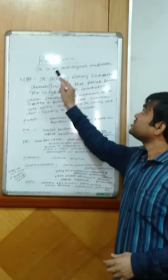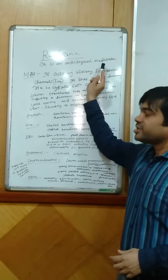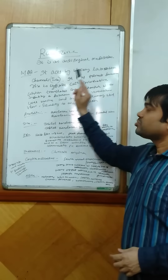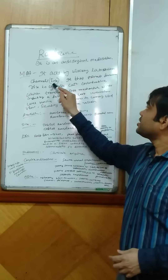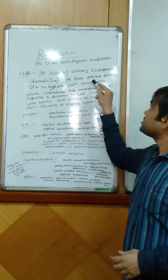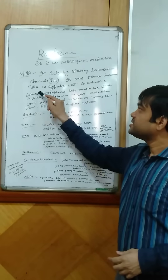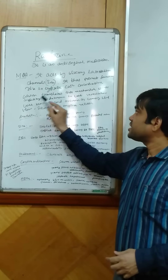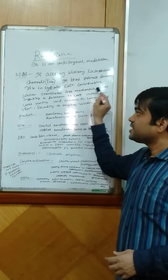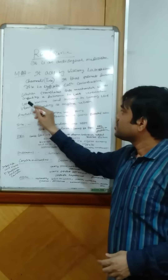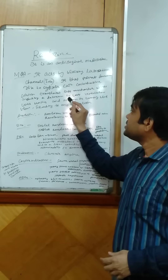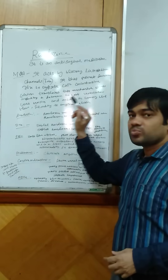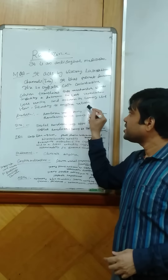We know that Ranolazine is an anti-anginal medication. Coming to the mechanism of action, it acts by blocking late sodium channels, that is INa. It thus prevents downstream rise in cytosolic Ca2+ concentrations, which translates into mechanical effects, including a decrease in left ventricular wall tension and increase in coronary blood flow, leading to angina relief.